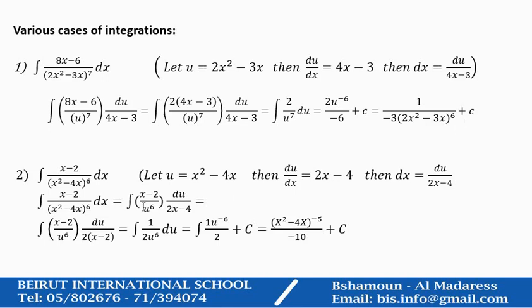Another example: we find the integration of (x minus 2) over (x squared minus 4x) all to power 6 dx. Also, we say let u equal x squared minus 4x. You find du/dx, you find dx in terms of du.